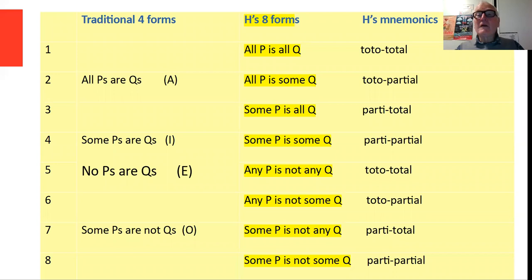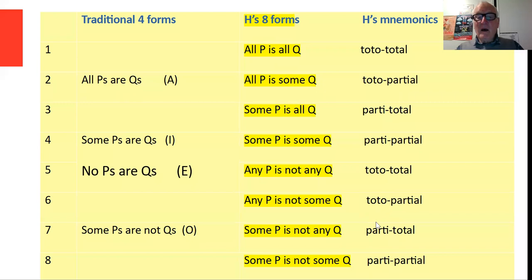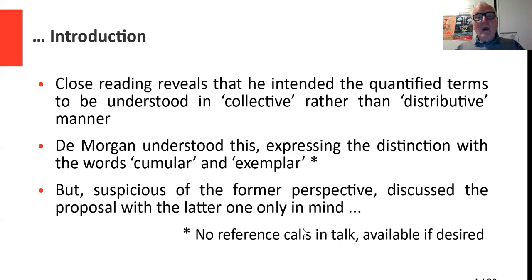Here are his eight forms produced by that quantification of the predicate. In the left-hand column you have the traditional four forms — all P's are Q's, some P's are Q's, no P's are Q's, etc. — and then his eight forms in which the predicate is also quantified by all, some, or any. There are positives and negatives. He had mnemonics for these: 'toto-total' for all-all, 'parti-total' for some-any with negation. A close reading reveals that he intended the quantified terms to be understood in a collective rather than a distributive manner.